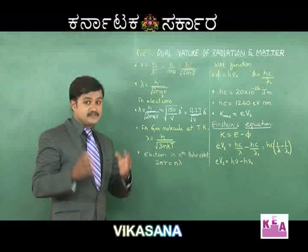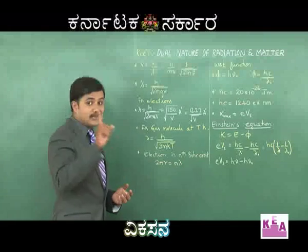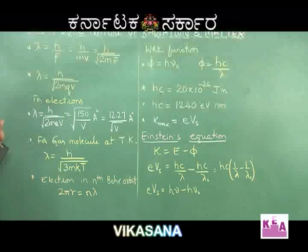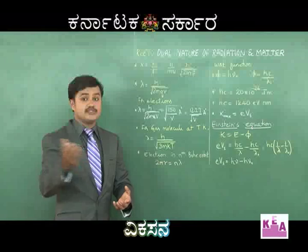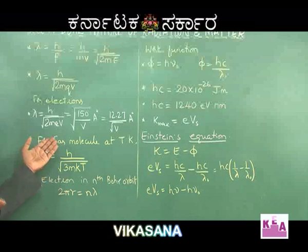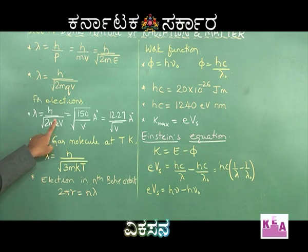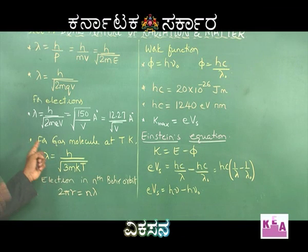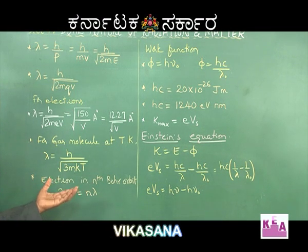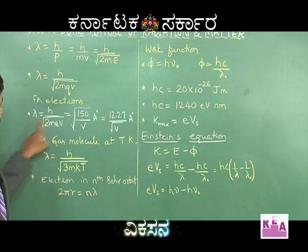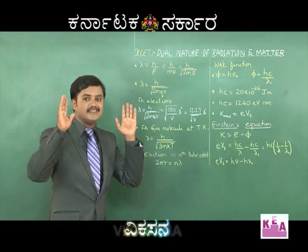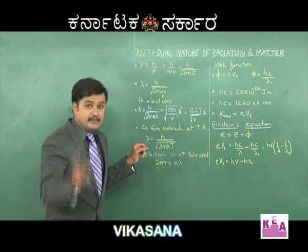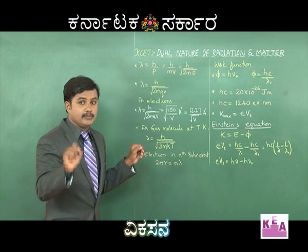For electrons, which appear in most competitive exam problems, replace Q by e, giving λ = h/√(2meV). Since h, m, and e are constants, you don't need to substitute their values every time. After simplification, we obtain λ = √(150/V) in angstrom units, where V is the accelerating potential. This can also be written as λ = 12.27/√V angstroms. Students should remember this expression for the de Broglie wavelength of electrons.